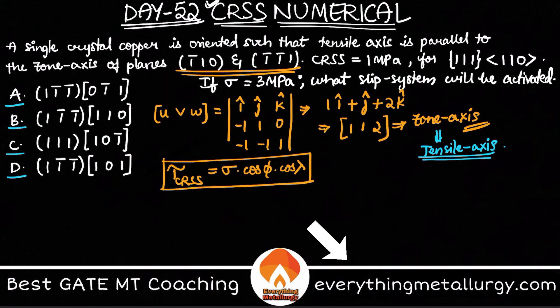Cos φ and cos λ are the cosines of the angles between the tensile axis and the slip direction, and the other one is between the tensile axis and the plane normal.